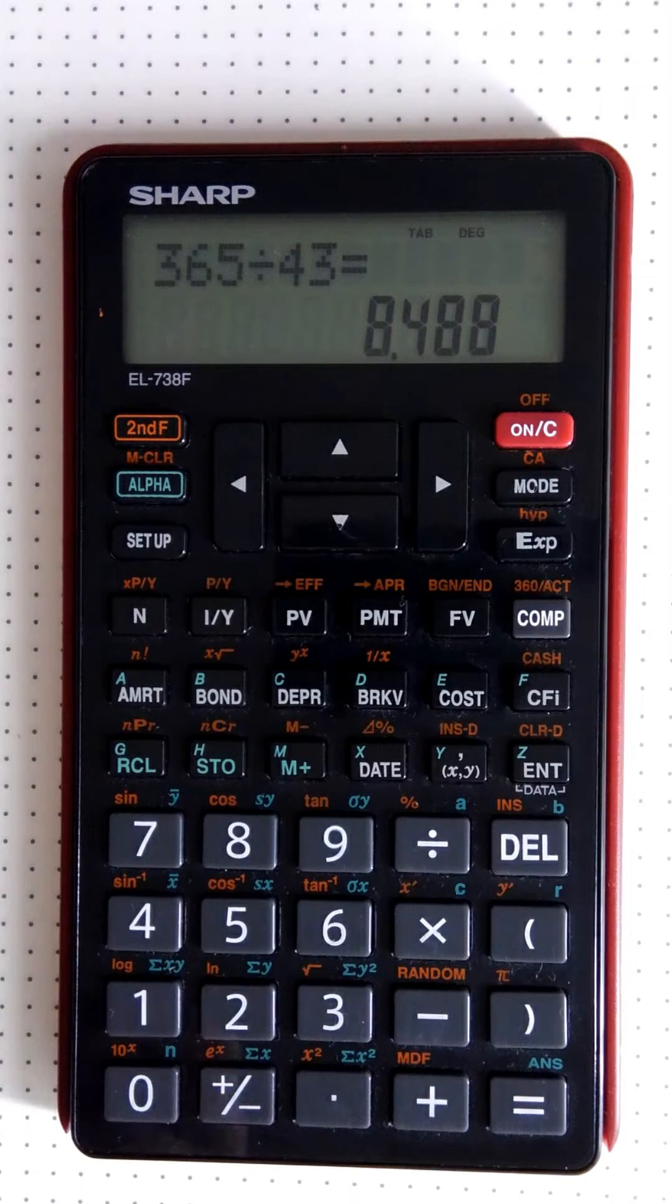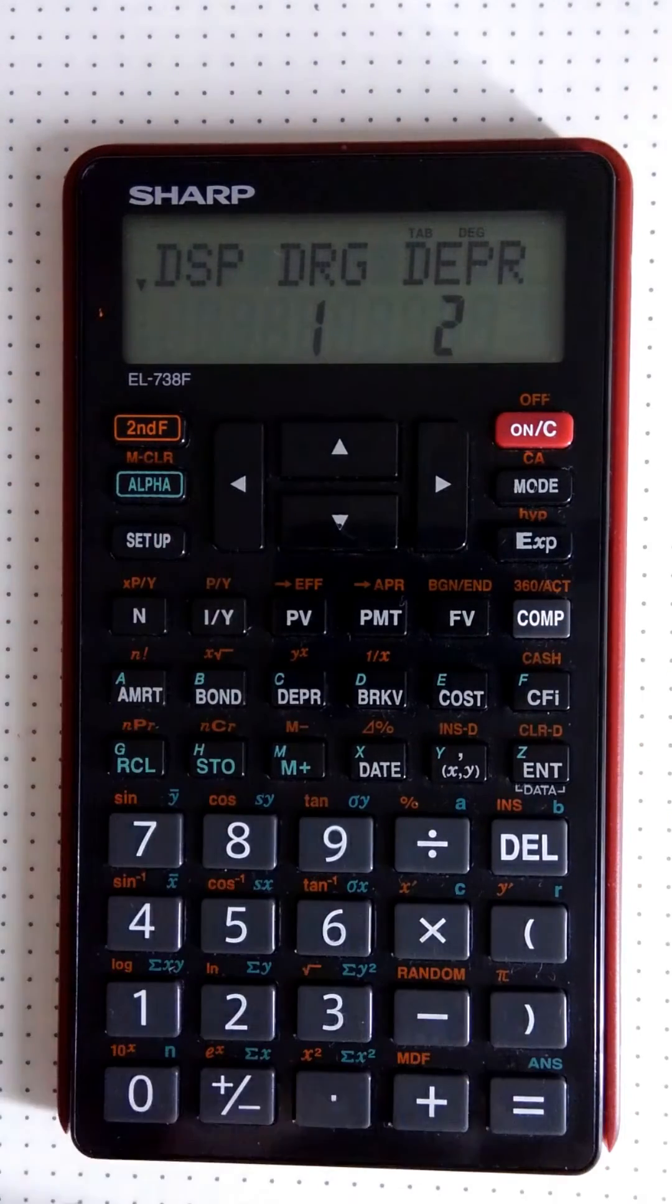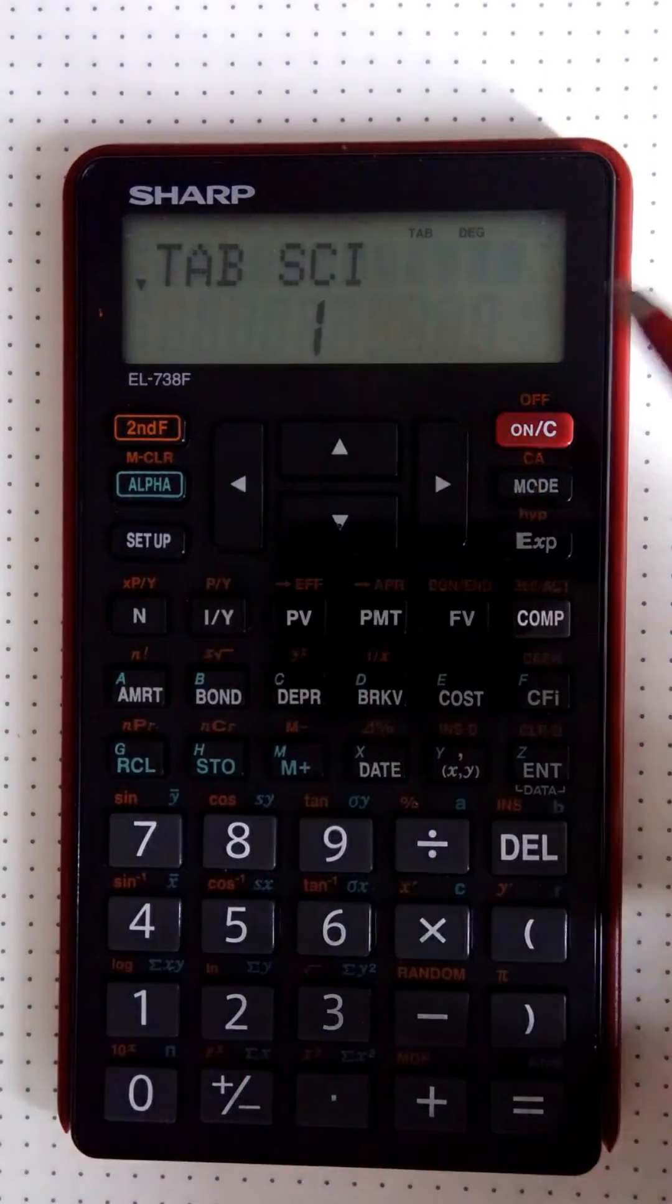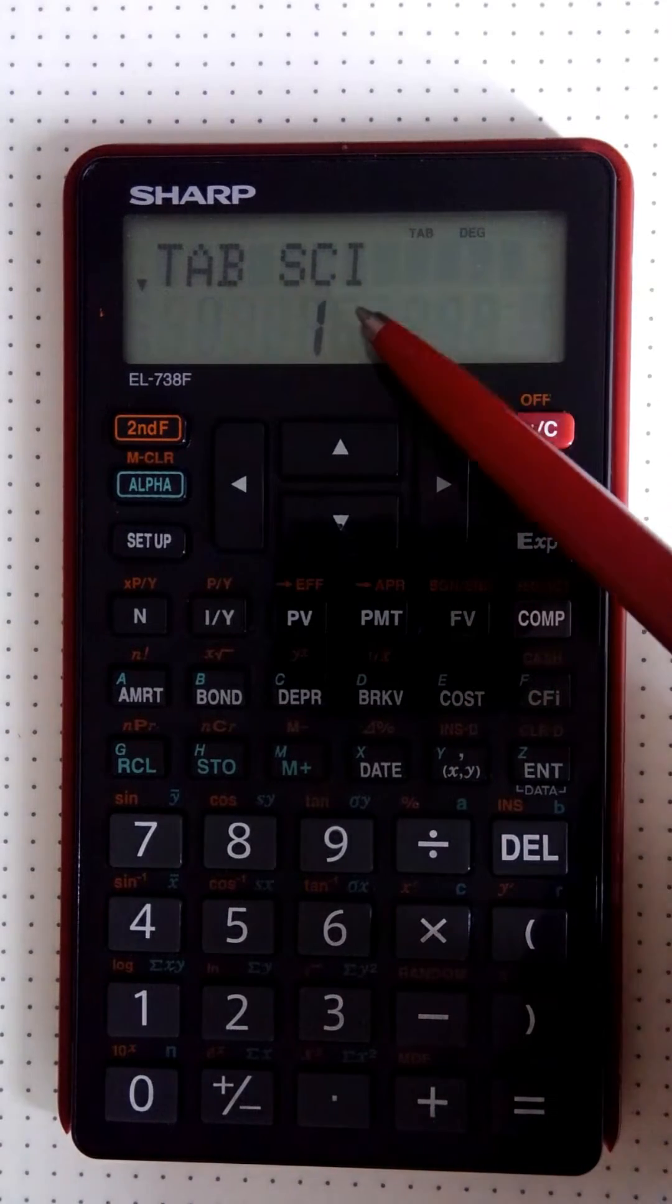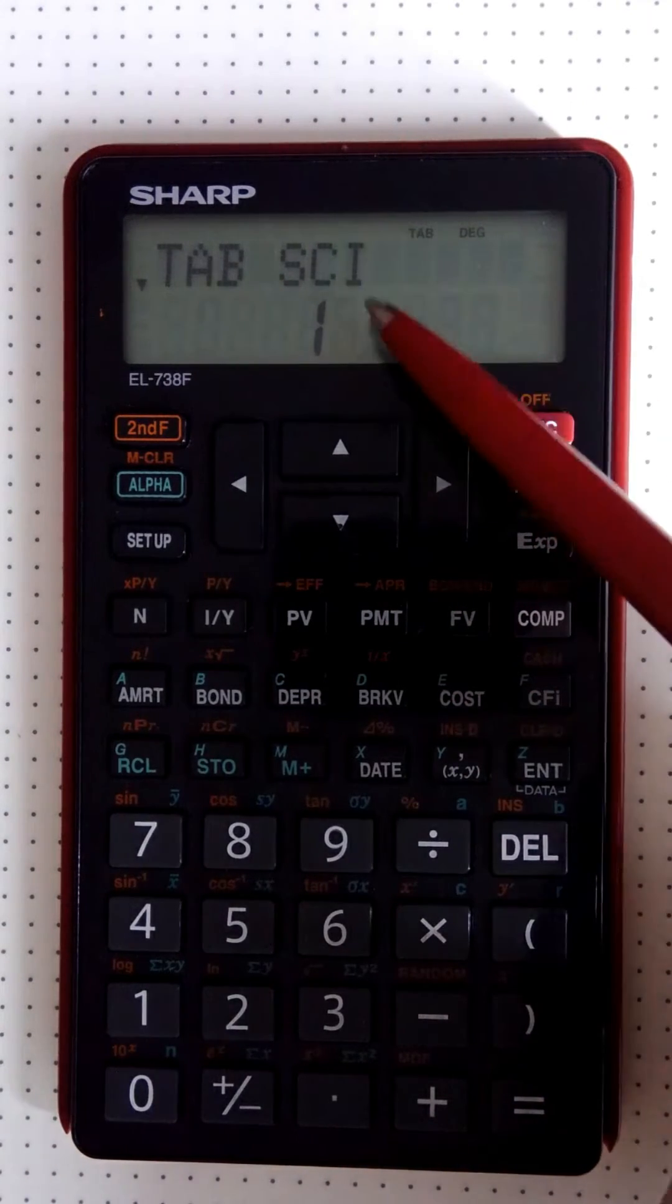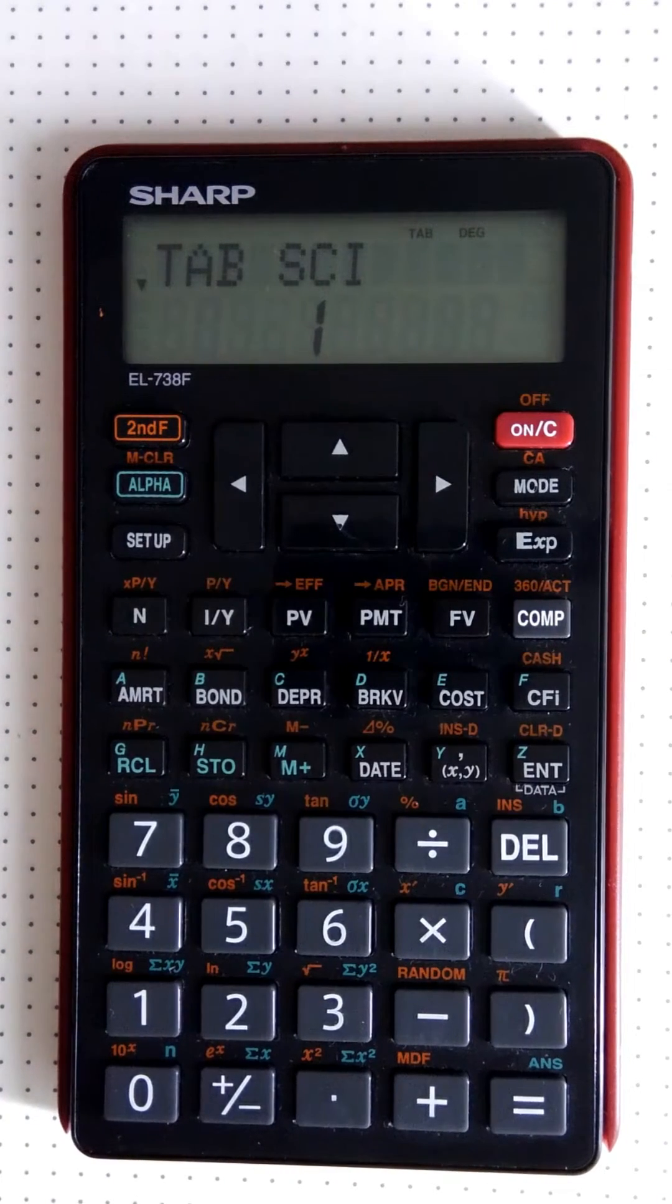What if we wanted to see everything without any rounding off? We'd still use the setup, still go into display, but what we're going to do is—there you have tab, you have science—number two, which you don't actually see on your menu, is going to take you to the floating point notation.